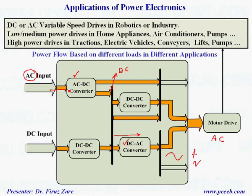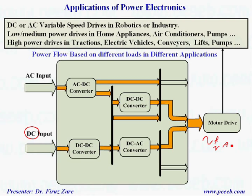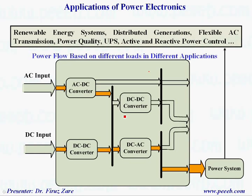Or if the voltage source is DC, and we still need to provide variable frequency and variable magnitude for an AC drive system, we can control the voltage through this DC-DC converter, and then through the second converter provide variable frequency and variable voltage for the AC drive system. In the last application — power system applications — especially for renewable energy systems, distributed generations, flexible AC transmission, power quality, uninterruptable power supply, and active and reactive power control.